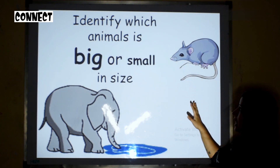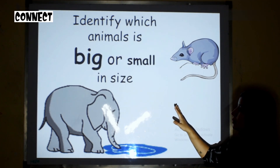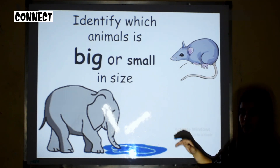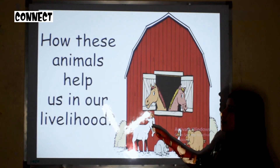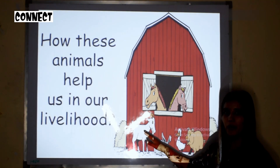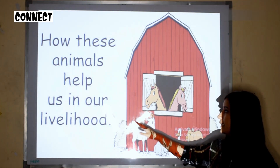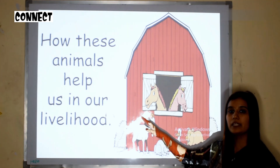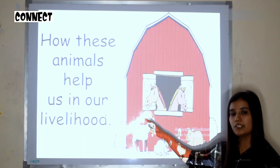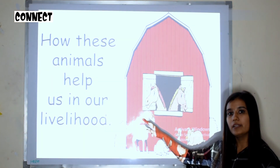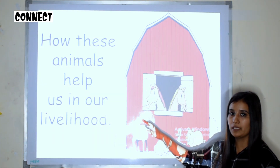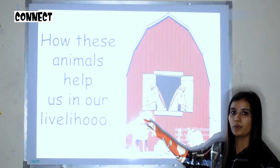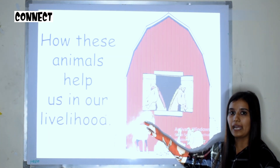In this slide we will ask which animal is big or which is small in size. Then we will tell children about different animals that live with us and help in our livelihood, giving examples such as a cow that gives us milk and a horse that carries our materials from one place to another.